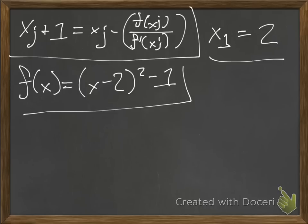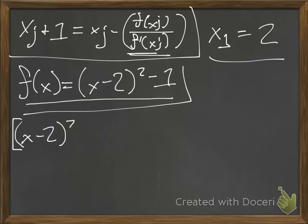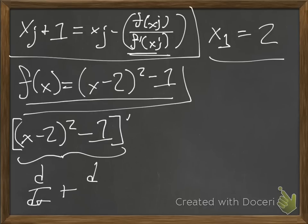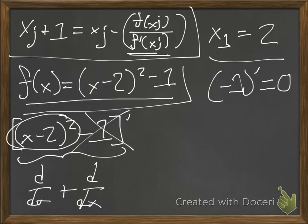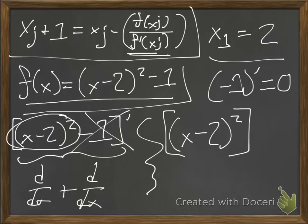The first step is to take the derivative of this function, so we know what we're plugging into the f'(xi) portion. So f'(x) of (x − 2)² − 1: using the sum rule, that's the derivative of each part. The derivative of negative 1 — being a constant — is just 0, so we can cross that out. We don't need to worry about it.